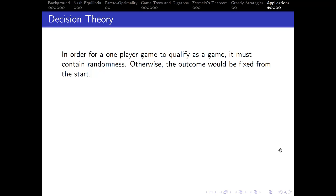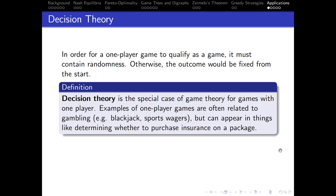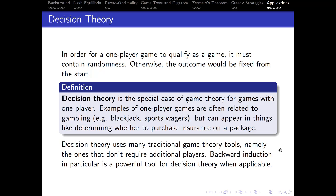Decision theory is the special case of game theory for games with one player. For a one-player game to qualify as a game, it must contain randomness — otherwise the outcome would be fixed from the start. Examples of one-player games are often related to gambling, like blackjack or sports wagers, but can also appear in things like determining whether to purchase insurance on a package, which is important for economic applications. Decision theory uses many traditional game theory tools — namely those that don't require additional players — and backward induction in particular is a powerful tool when applicable.